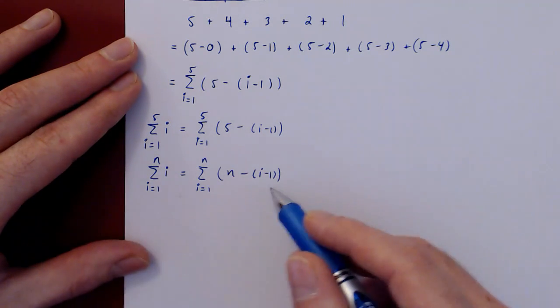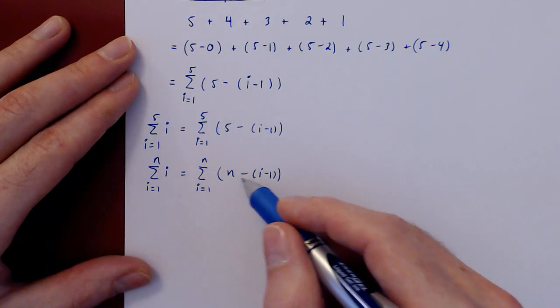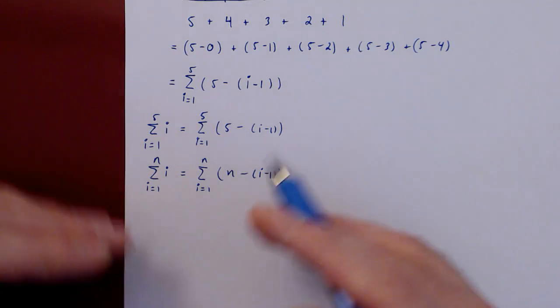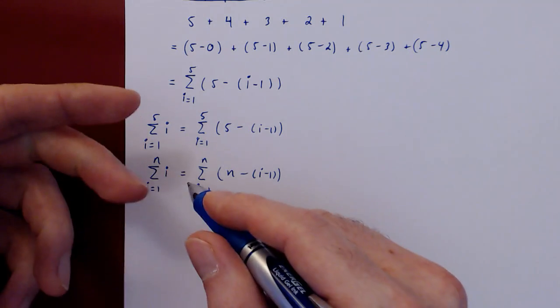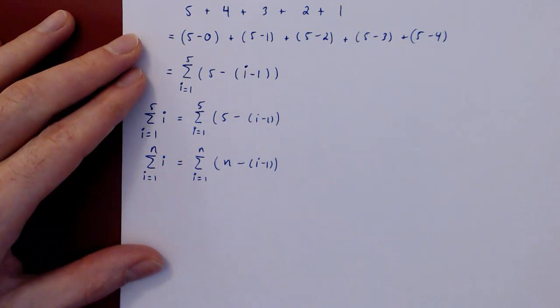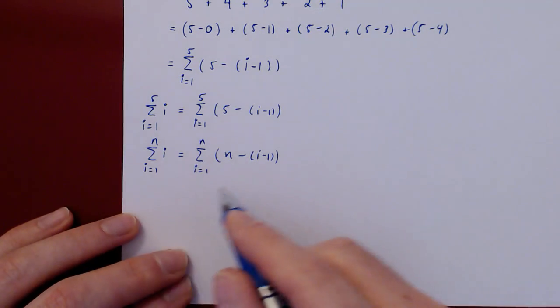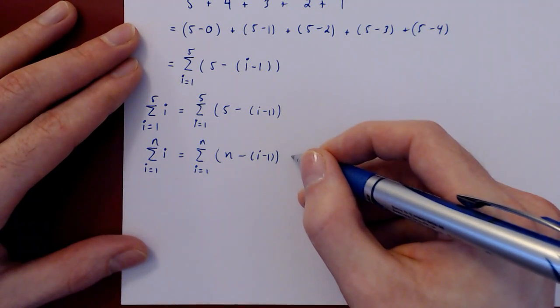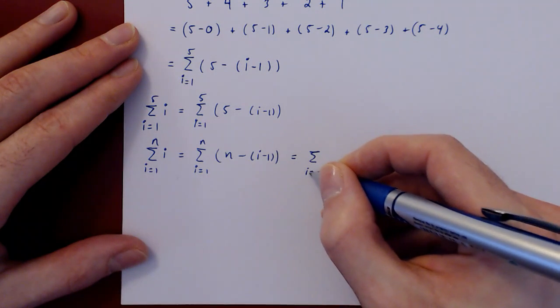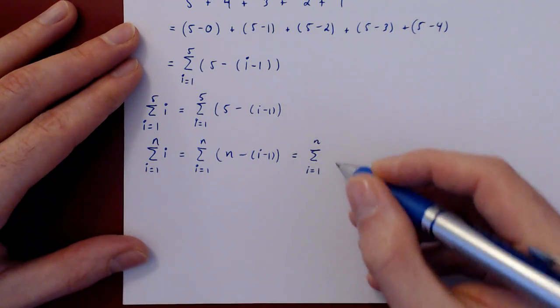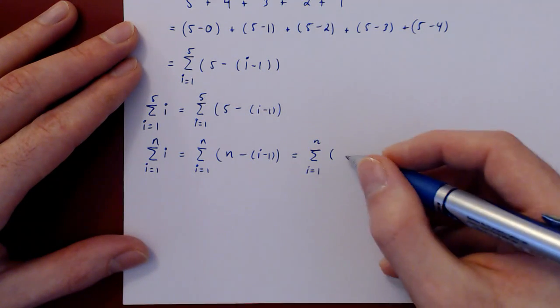And now we have the desired equality. Two different looking sums that were arrived at in different ways, but since we were counting the same quantity, they have to be equal. Well, let's now use basic properties of summation to rearrange the equality. So on the right, if we distribute, we get n minus i minus minus 1 plus 1.